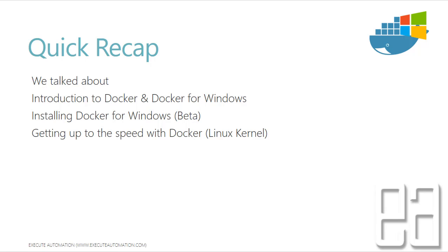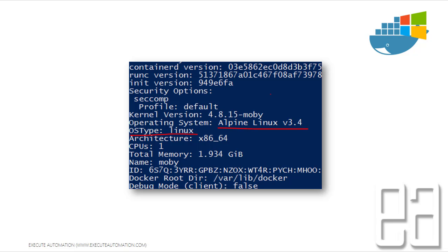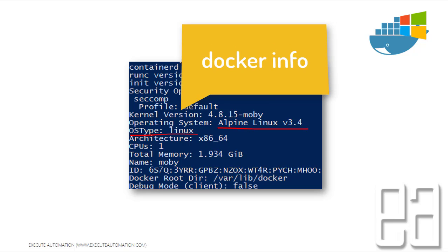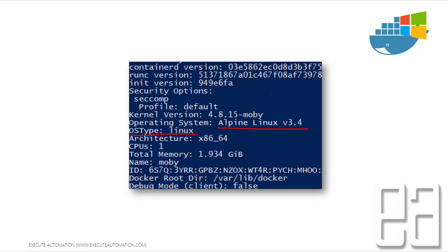Let's get started. Before we begin, let's do a quick recap of what we've talked about so far, because those are the foundation videos for this one. We talked about an introduction to Docker and Docker for Windows, and we did the installation of Docker for Windows on a Windows 10 machine. We also discussed getting up to speed with Docker on the Linux kernel — running 'docker info' showed us the OS type was Linux, version 3.4.